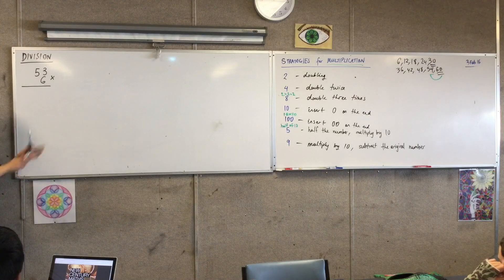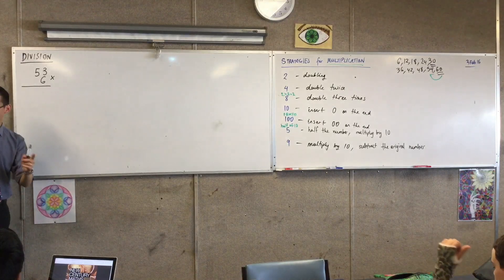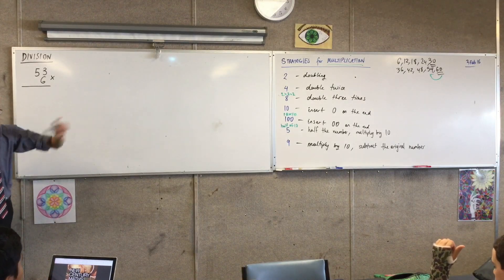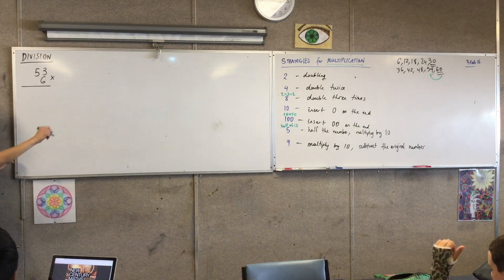Okay, pause. 6 times 3, how are we with our tables? In fact, I think I've got it up there. What is it? 18. 18, very good. So what do I do with that?